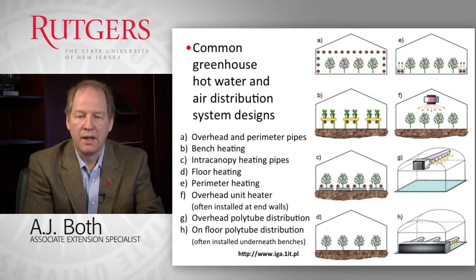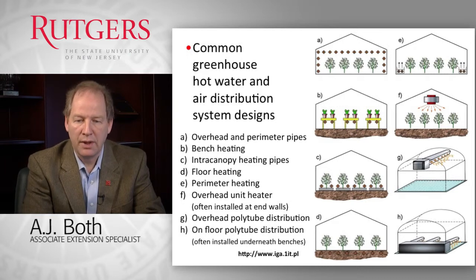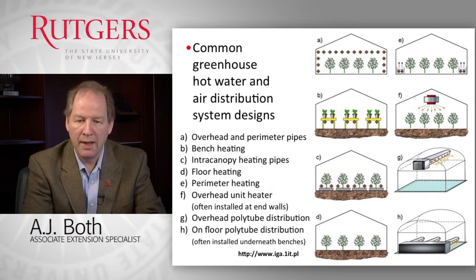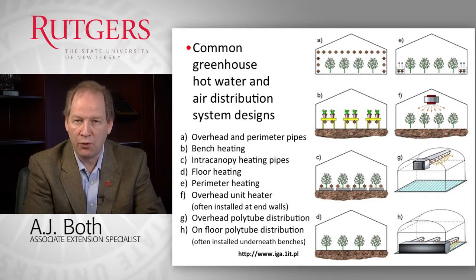In this slide you see several common installation systems for both hot water and hot air heating systems in greenhouses. We can have pipes along the overhead and perimeter, pipes underneath benches, pipes in between rows of plants that can also be used for transportation purposes — for example in tomato or pepper crops. We can have floor heating systems where we put heating pipes inside the floor, which could be a dirt floor or a concrete floor.